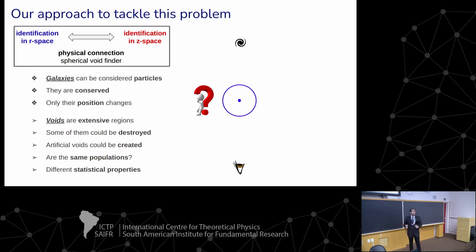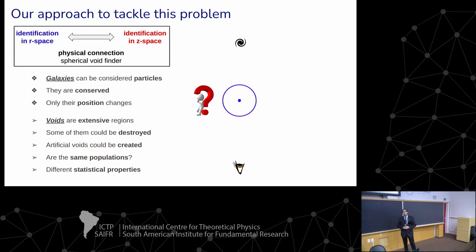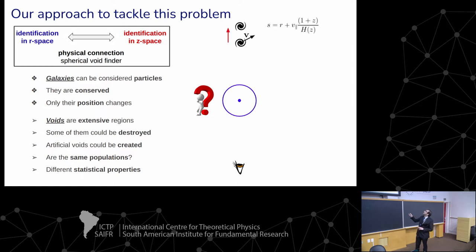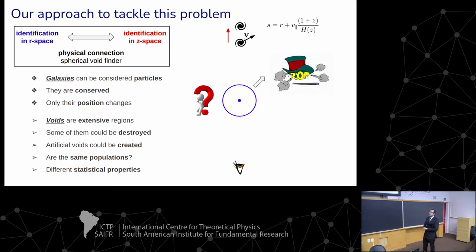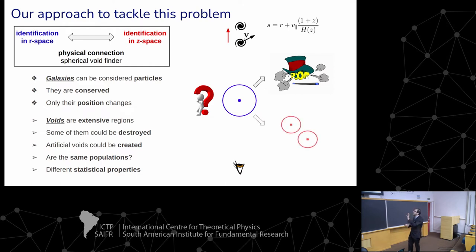Our approach to tackle this problem: using our spherical void finder, we tried to find a physical connection between the identification of voids in real space — free of distortions — and the identification of voids in redshift space — fully affected by distortions. This was not trivial, because the case of galaxies is very different from the case of voids. Galaxies can be considered as particles, so under the mapping from real space to redshift space, galaxies are totally conserved — only their position changes. But voids are very different, mainly because they are extended regions. Under this mapping, some voids can be destroyed, whereas other artificial voids can be created. So it is not trivial to answer whether both populations of voids in real space and in redshift space are really the same.